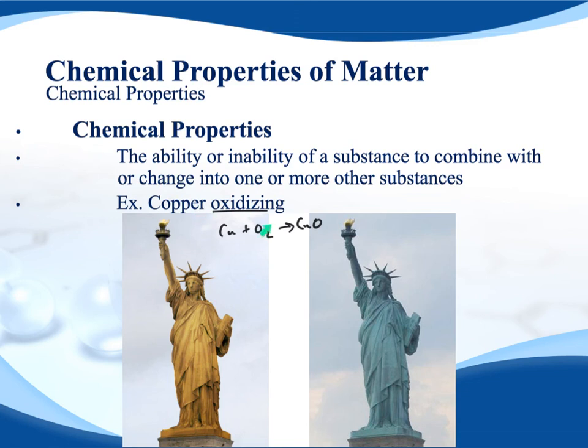This is a chemical property of copper, and many metals share this property — they'll oxidize if they're in the presence of oxygen. Only the noble metals really won't do that. Iron will rust, turning that brown-red color you're probably familiar with. That's a chemical property of many metals — the ability or inability of a substance to combine or change into one or more other substances.